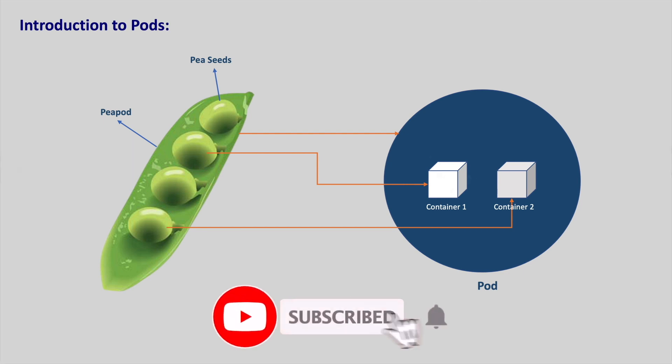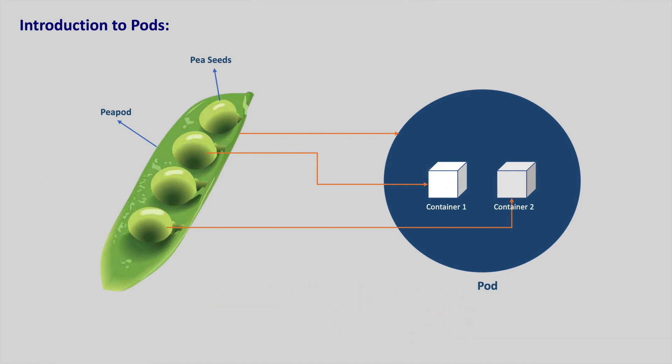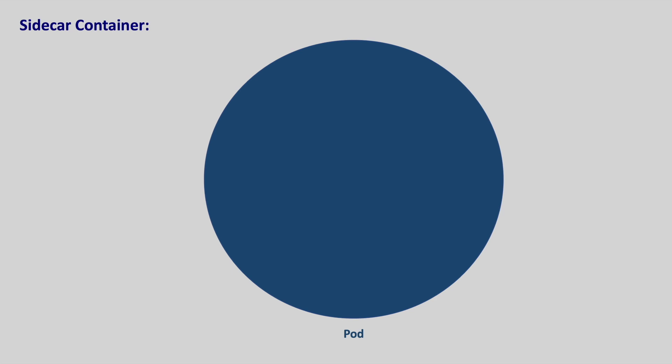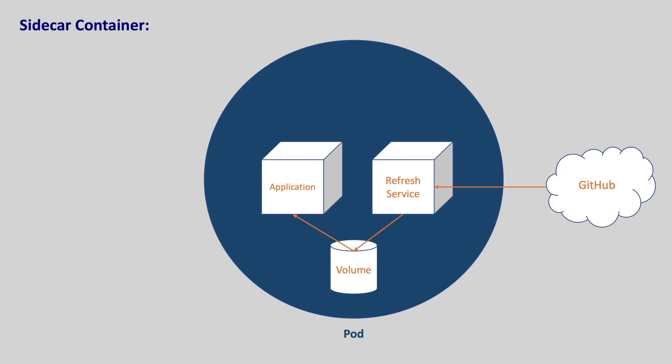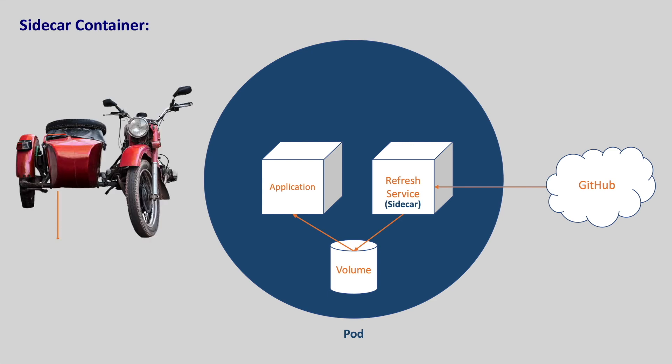You might be wondering why we need this extra layer of pod when our application runs in a container. In most cases each pod will have only one container. Let's see a use case where we need multiple containers. Say our application is running in a container getting configuration from a shared volume, and we want to update that configuration every hour by pulling from GitHub. We can hand over the refresh part to a separate container - this is called a sidecar container.